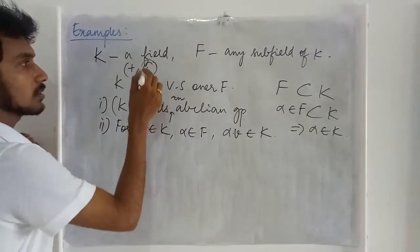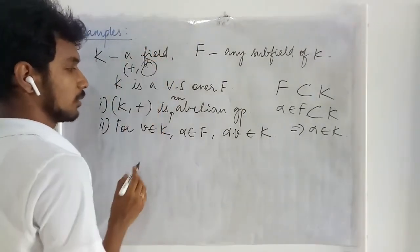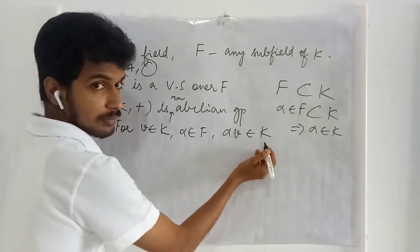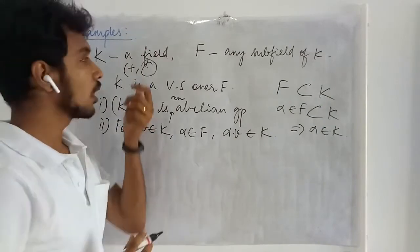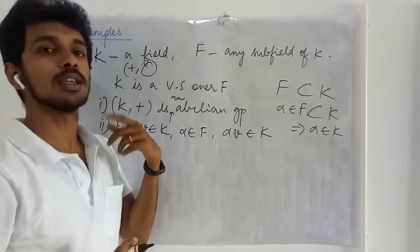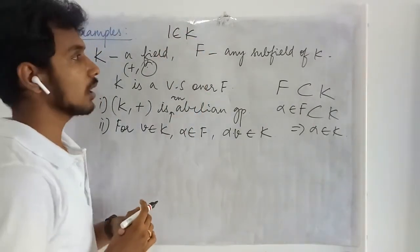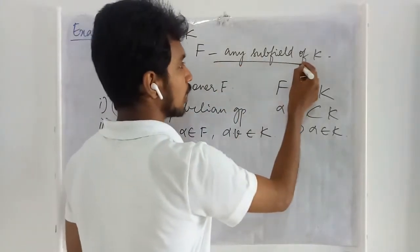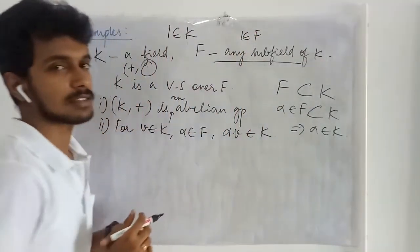And the multiplication is defined in K. By the closure property of this multiplication this is true. And since this is a field the distributive law holds in this. And it has the unit element that is one belongs to it. And it is saying to be a subfield therefore this one is also a member of F as well.